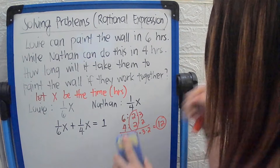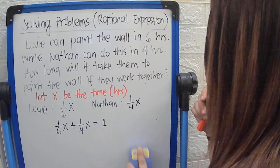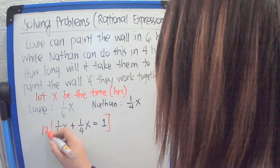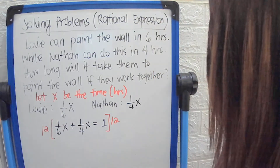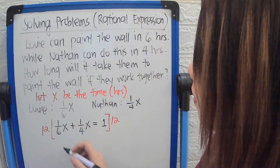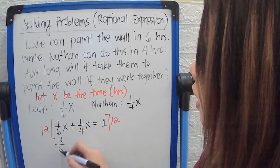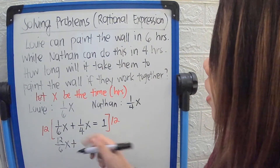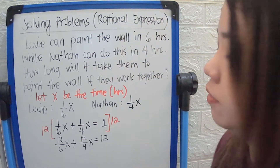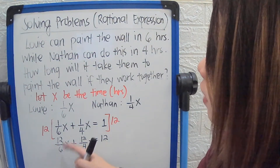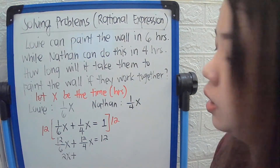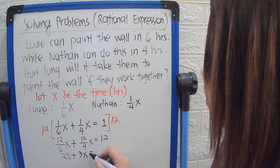We will multiply both terms by the LCD of 12 to eliminate the fraction form. Multiplying the LCD by the numerator only: 12 multiplied by 1 is 12 over 6x, plus 12 multiplied by 1 gives 12 over 4x, equals 1 multiplied by 12 is 12. Then we divide: 12 divided by 6 is 2x, plus 12 divided by 4 is 3x, equals 12.